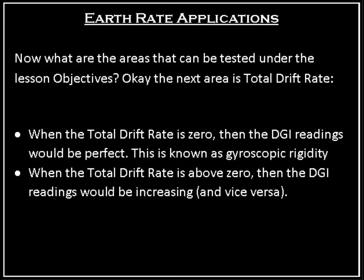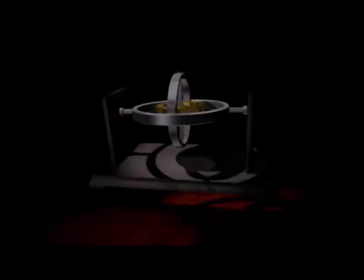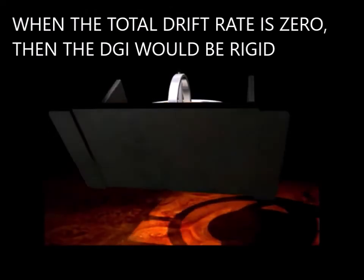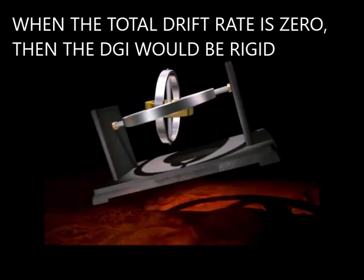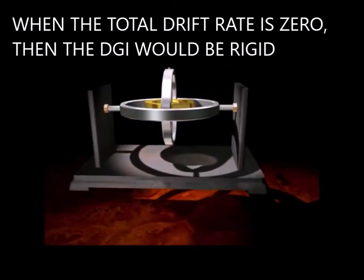The next area is total drift rate. When the total drift rate is zero, the DI readings would be perfect — this is known as gyroscopic rigidity. When the total drift rate is above zero, the DI readings would be increasing, and vice versa. We can better appreciate this effect with this example: independently of the movement of the frame or the gimbals, the rotor maintains its axis of rotation rigid in space.